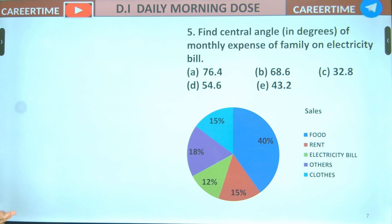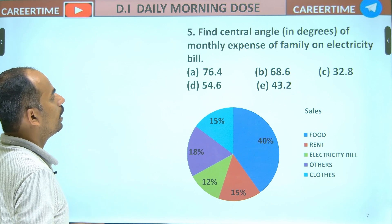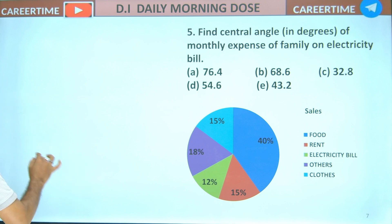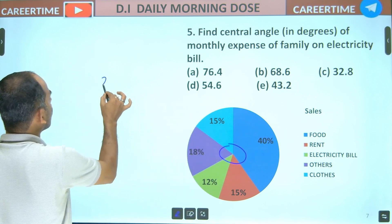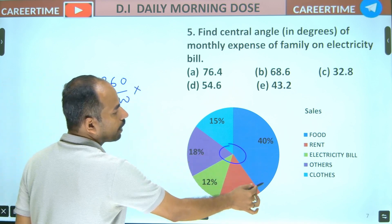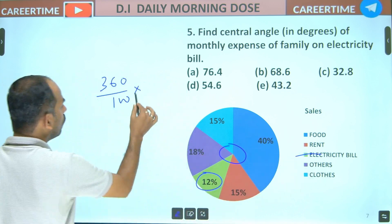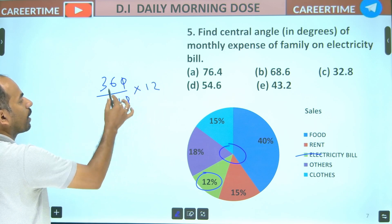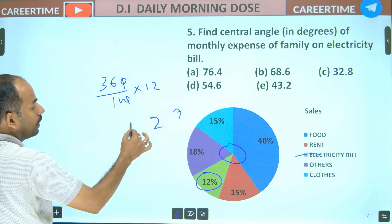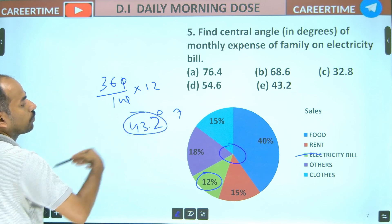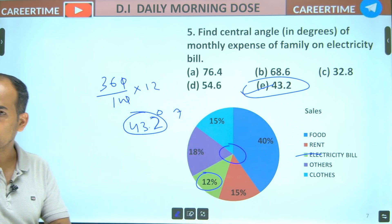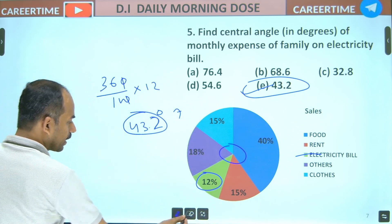Find the central angle of the monthly expense of the family on the electric bill. The electric bill — 360 degrees corresponds to 100%. Since electric bill is 12%, multiply: 12 times 360 divided by 100 gives 43.2 degrees. 43.2 degrees. Option no. E. Clear? Next.